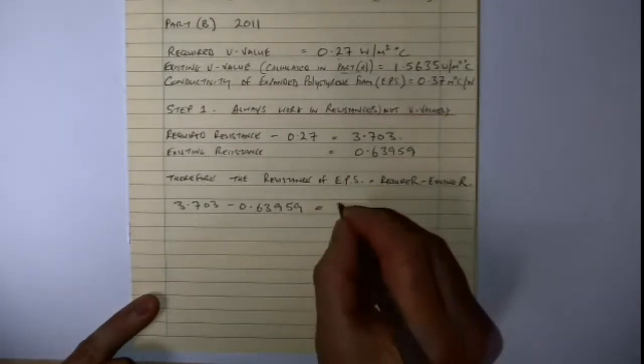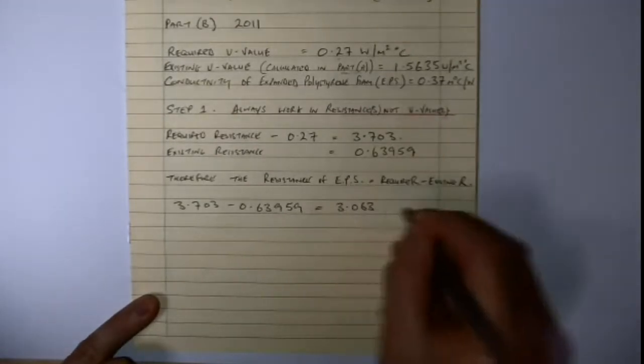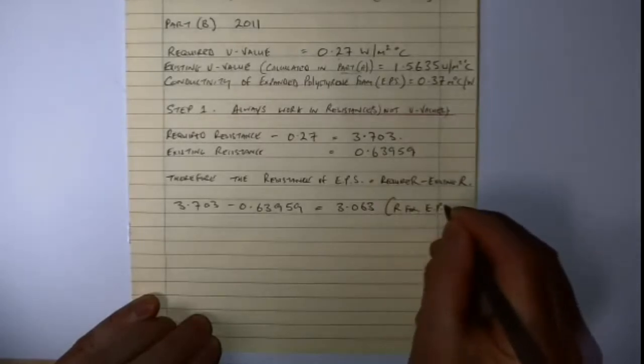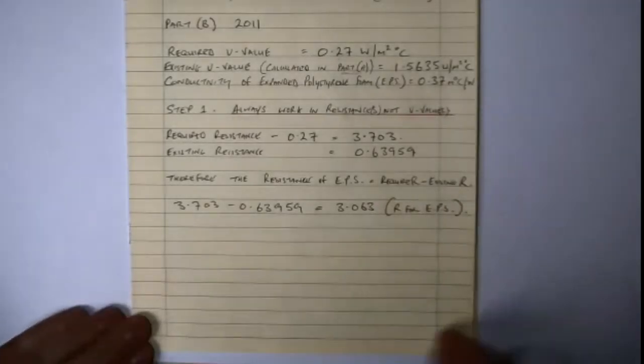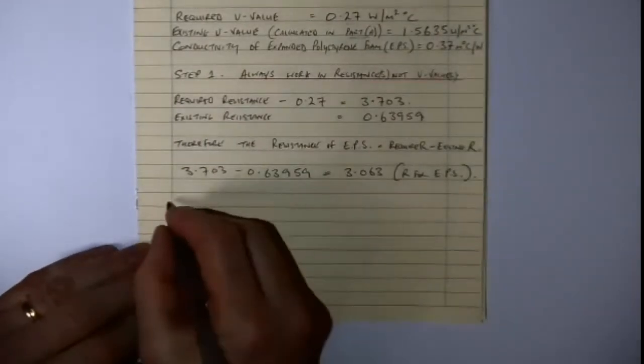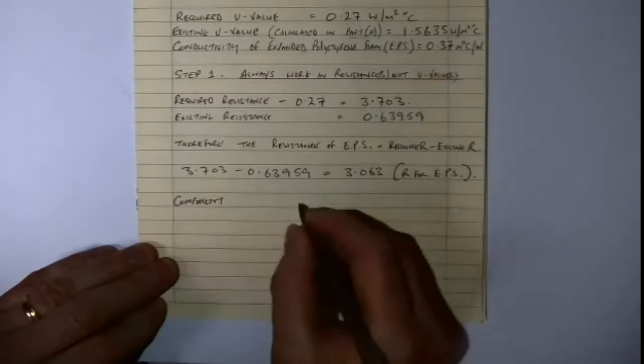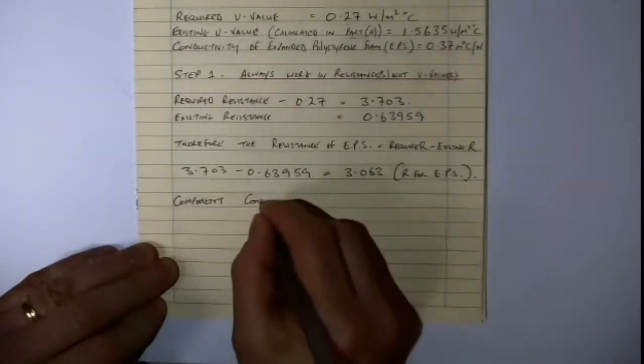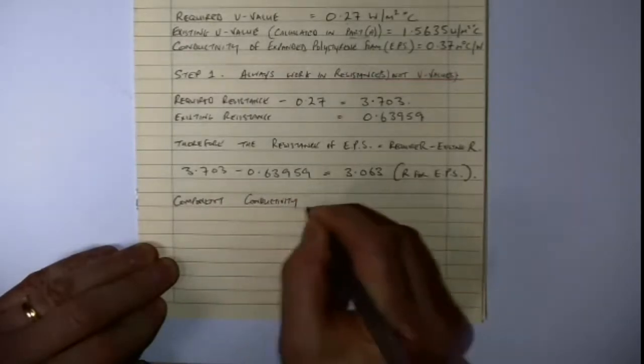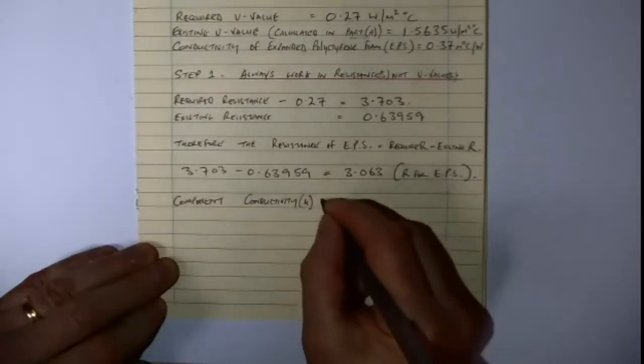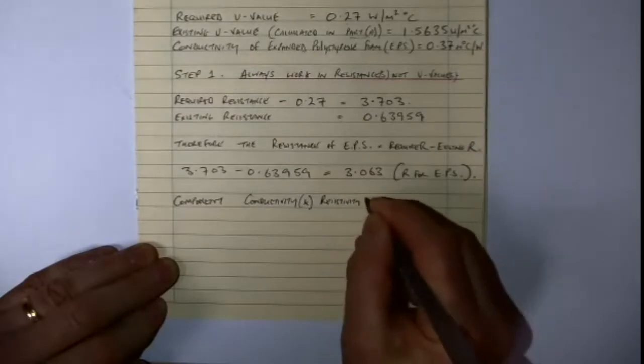And what we're left with here is a figure of 3.063, and that is the R that we require for the EPS. Now it's only the one element that's going into this to achieve it, so we can go by setting it out in a kind of table format, just for clarity here. So we've got the component, which is EPS. We'll have the conductivity, which we're given in the first part of the question, which I've written down here. You can see at the top of the sheet there, conductivity of expanded polystyrene, which is given in part B of the question.